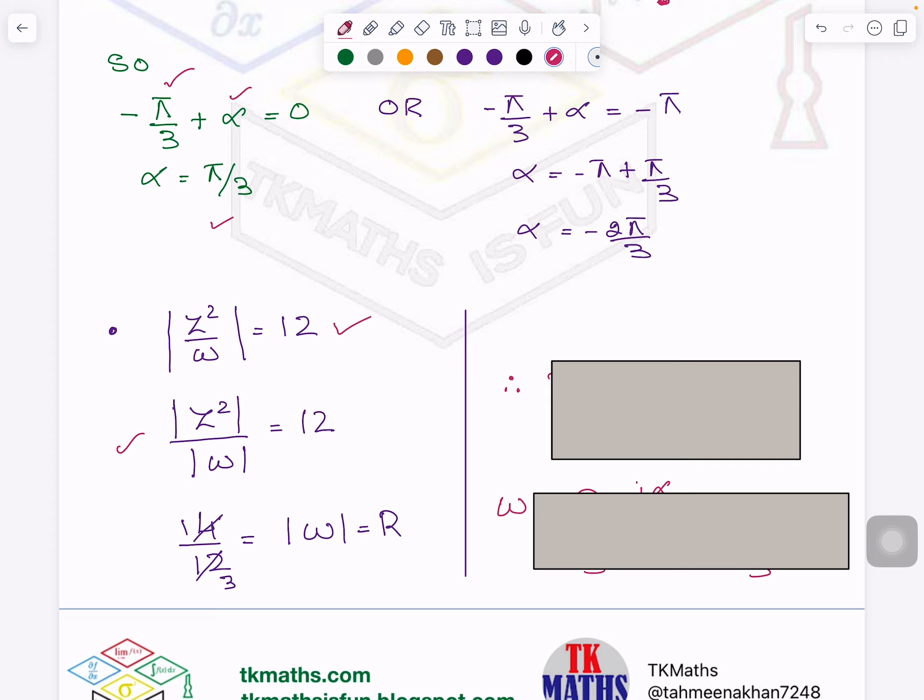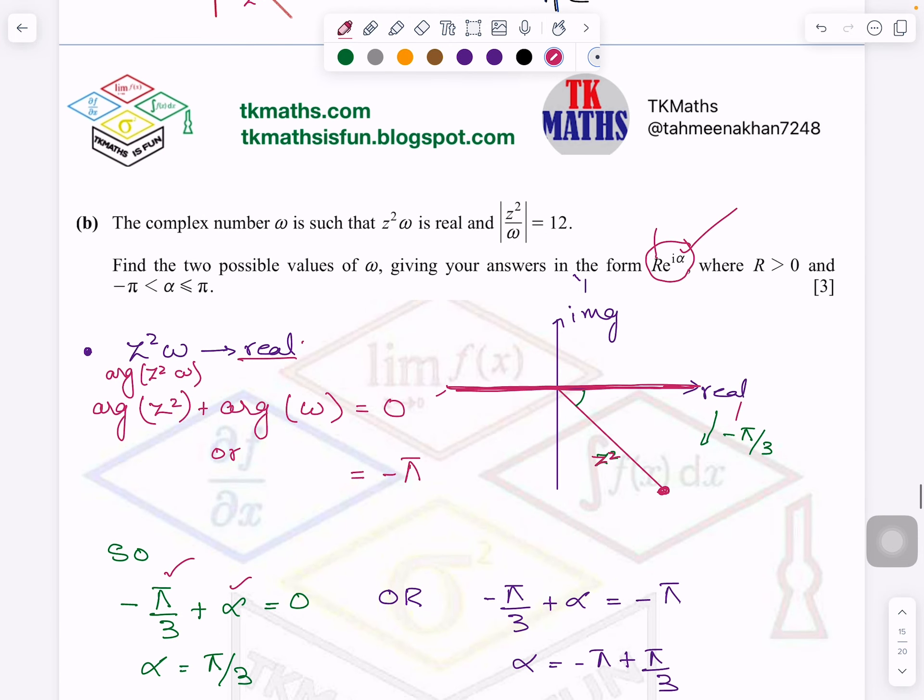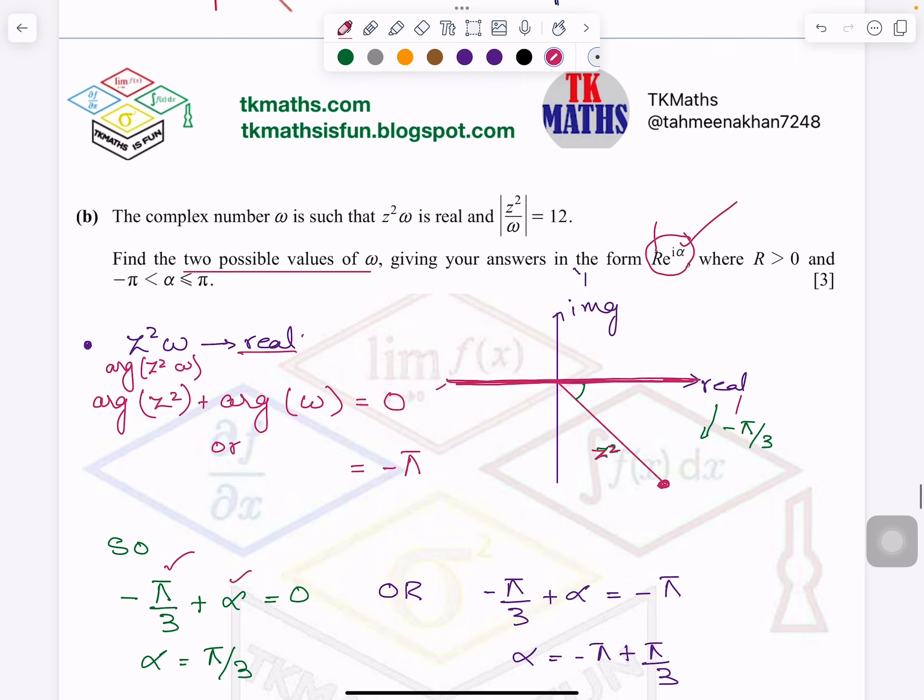So now you have angle and you have size. So you can easily write down the answer here. So these are the two complex numbers possible for the given condition. Question was saying, what are the two possible values of ω? So you have told here.